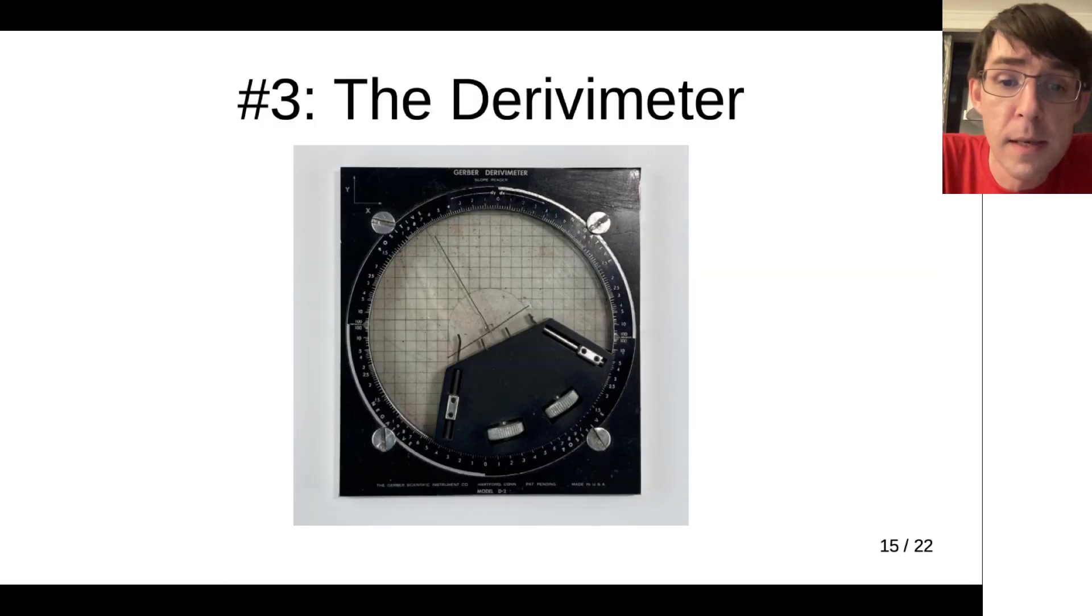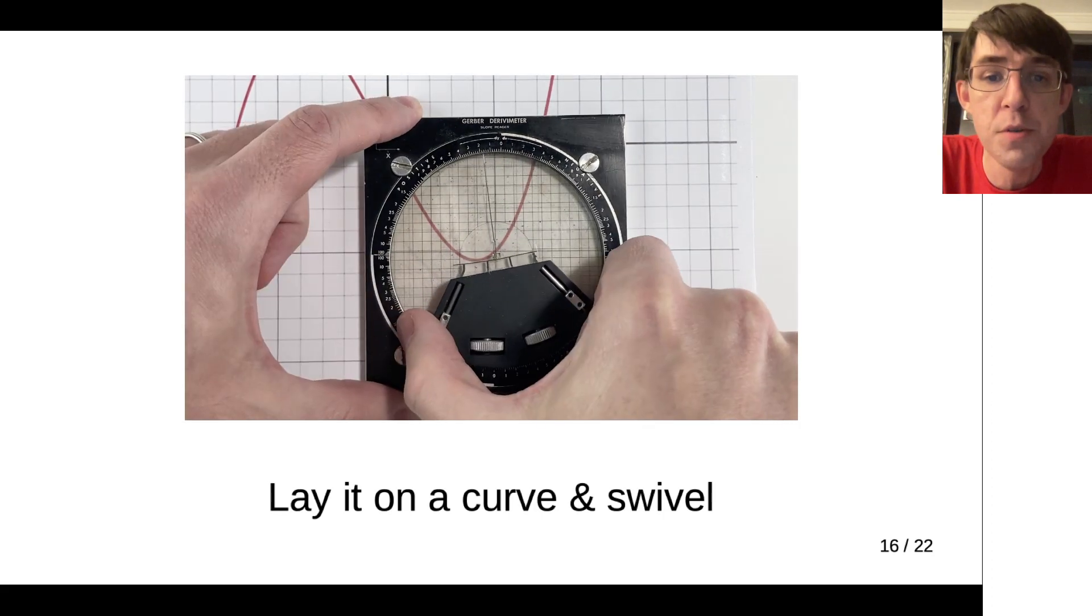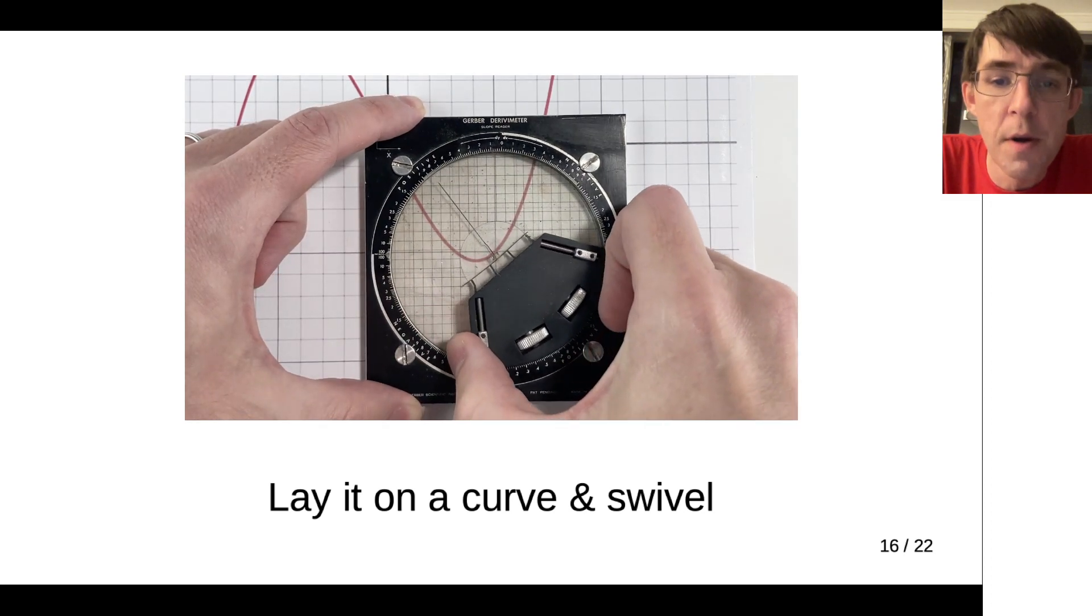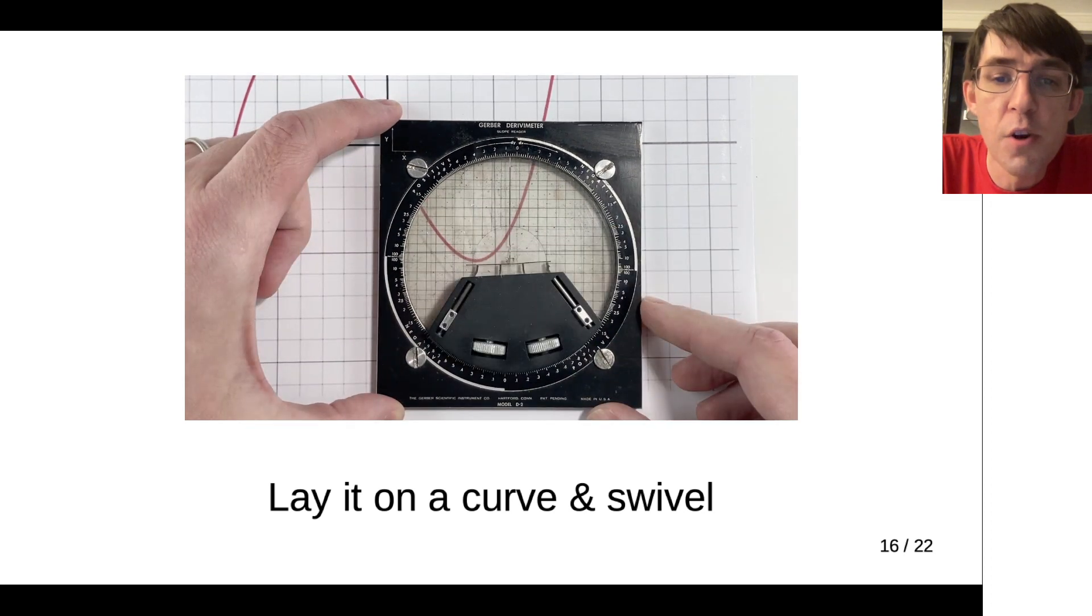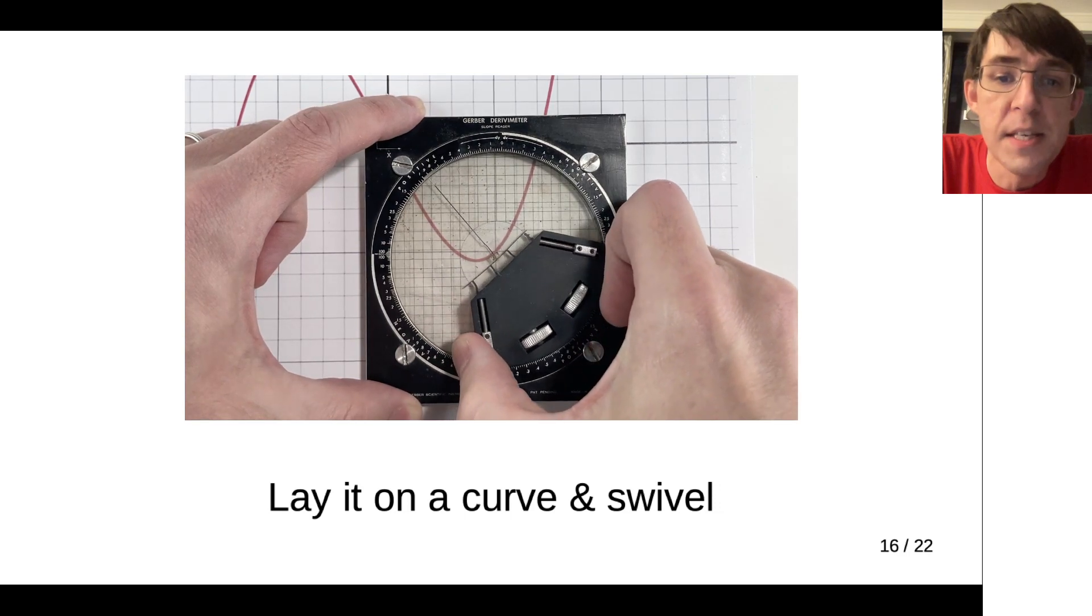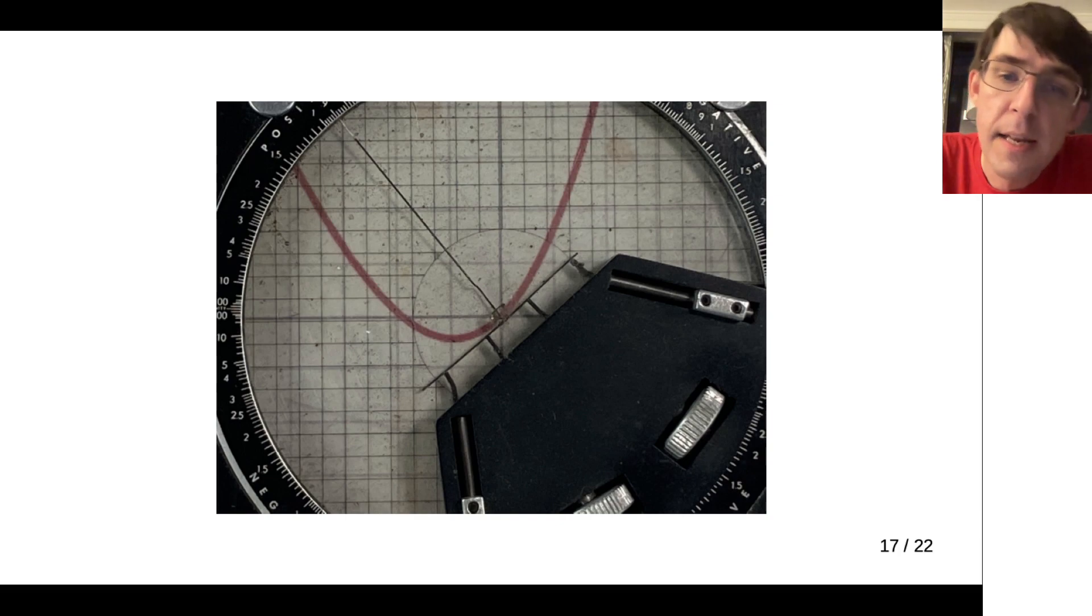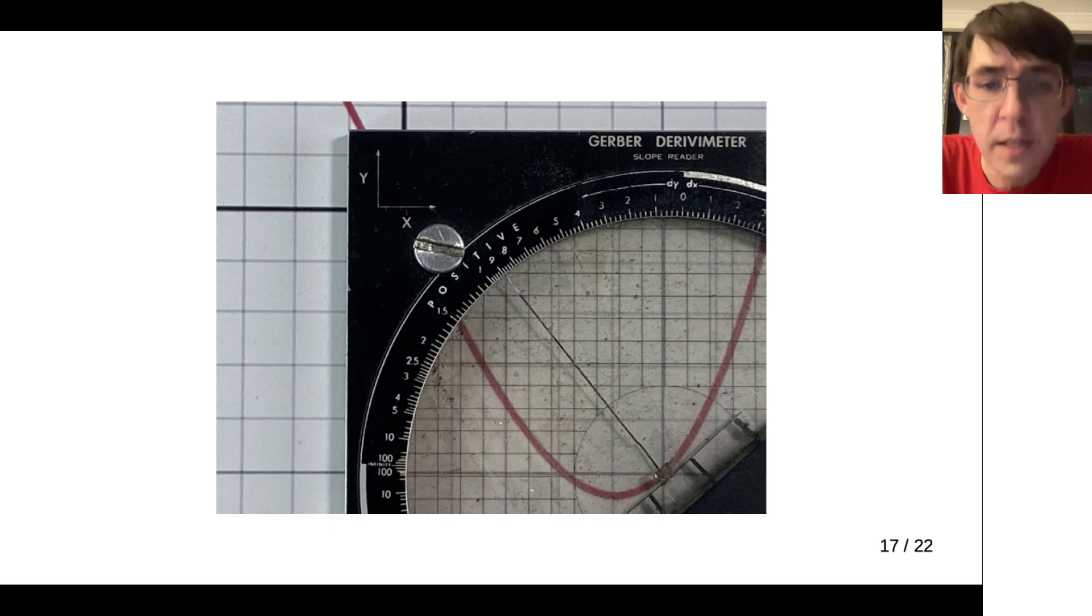And here's my last invention of Joe Gerber's I want to show you. It's called the derivimeter. This is an instrument for measuring the derivative of a curve. What you do is you lay it down on top of a curve on paper, and you sort of swivel the bottom of it there to line this crossbar up as the tangent of the curve. So you swivel it until the crossbar is tangent to your curve on the paper, and then it has this pointer that sticks out perpendicularly, and it points out the slope. So that tells you the derivative at that point.